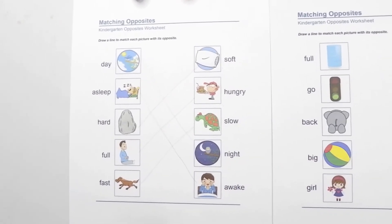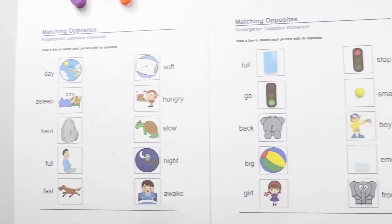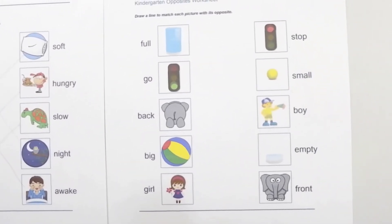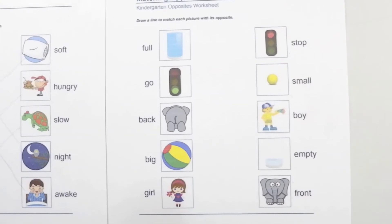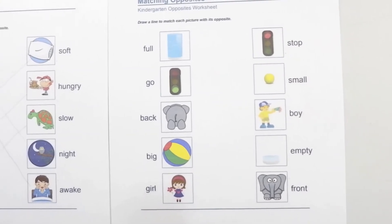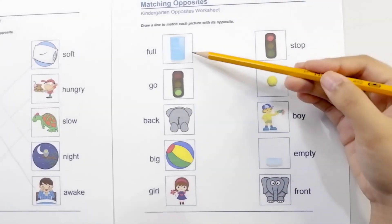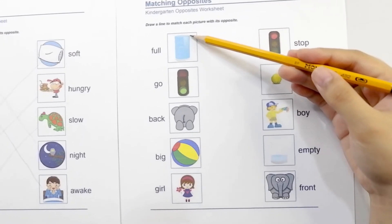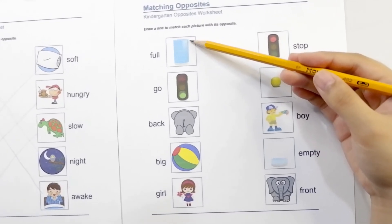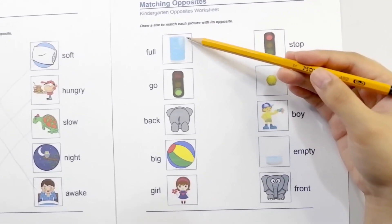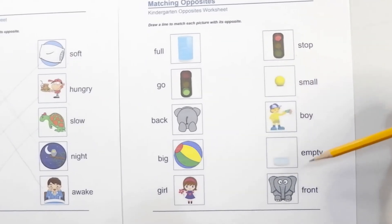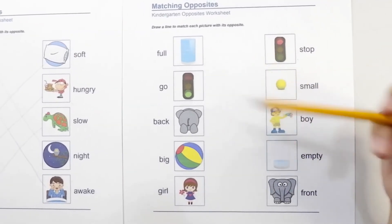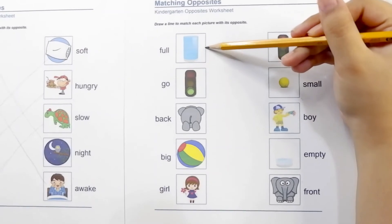Let's try one more activity, chameleons. Look here. The first picture is full — do you see the glass? It's full of water. Full directly contrasts with empty. Full and empty are opposites, chameleons.